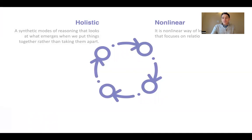Here we just break that down a little bit and talk about a few different dimensions to this. That first one around holism is a synthetic mode of reasoning. Synthesis means the putting together, that looks at what emerges when we put things together rather than taking them apart. It's a non-linear way of looking at the world, focused on the relations of interdependence and feedback dynamics, and we'll be talking about all of this as we go through.